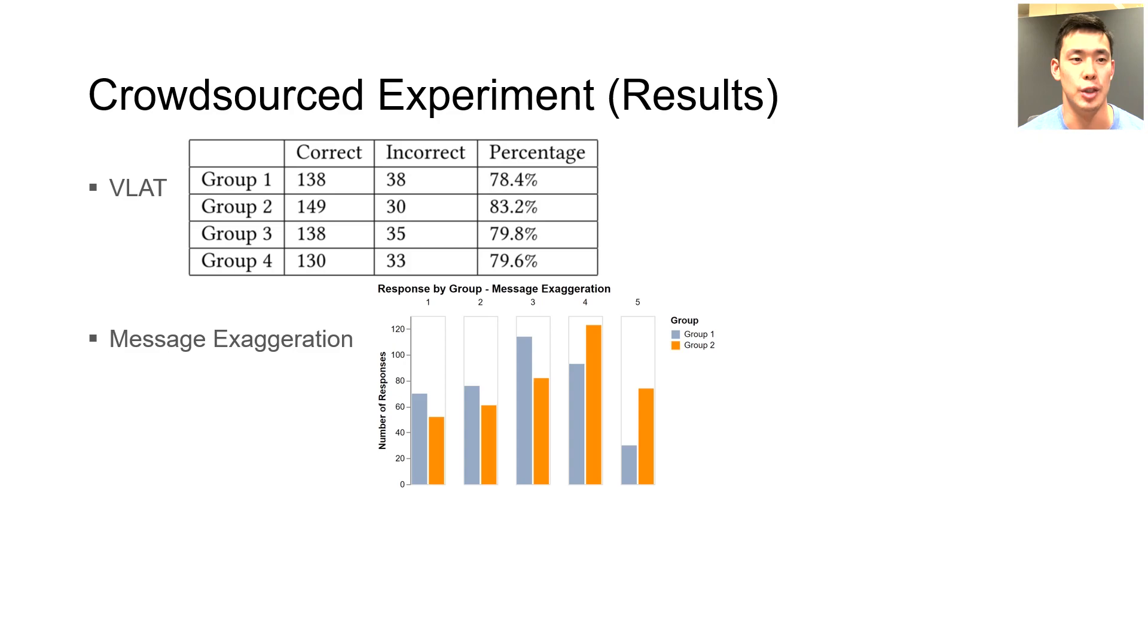On the contrary, group 2 participants did not see the annotations and were more likely to answer 4 and 5 more often. An odds ratio test yielded that group 1 participants answered 1 and 2, 2.25 times more frequently than group 2 participants. This is a significant result, as an odds ratio of greater than 1 implies a significant difference.